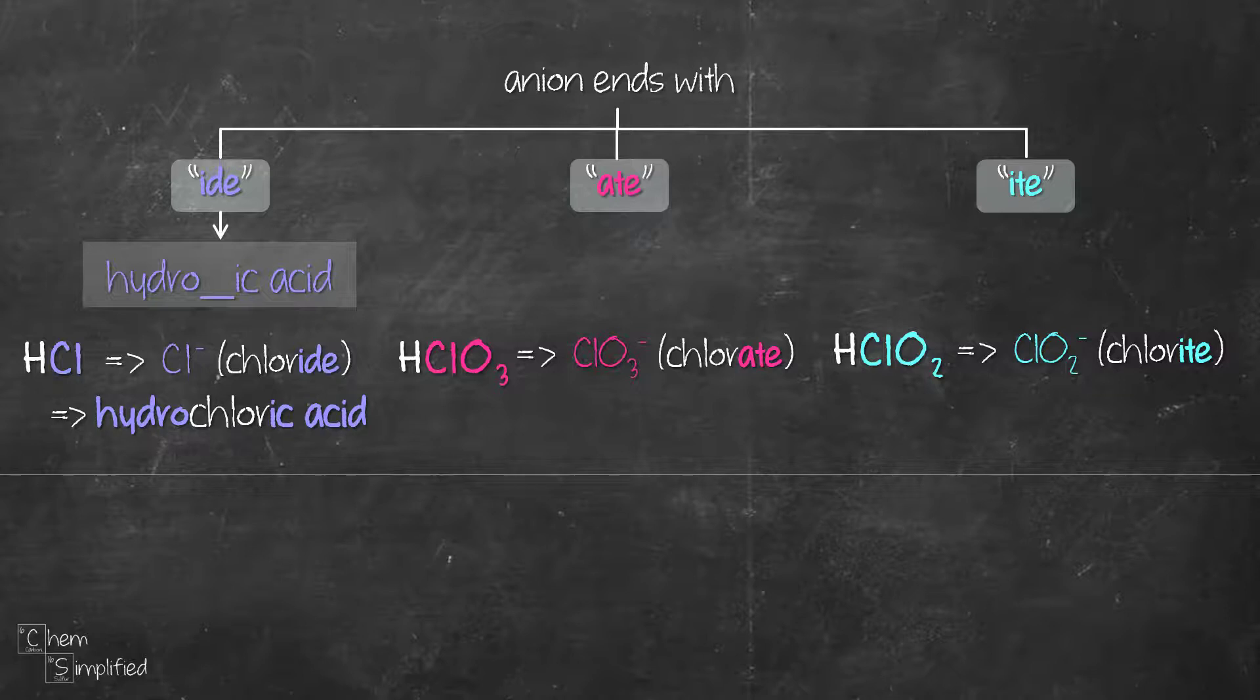For the anion that ends with ATE, we're going to replace the ATE with IC acid. So in our example chlorate, we replace the ATE and we put in IC acid. So the name for HClO3 is therefore chloric acid.